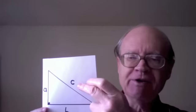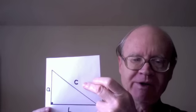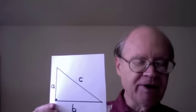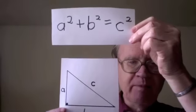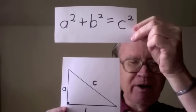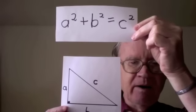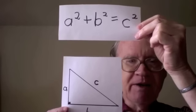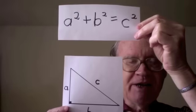and we call the third side, which is known as the hypotenuse, c, then the equation is a squared plus b squared equals c squared. That means a times a plus b times b equals c times c.